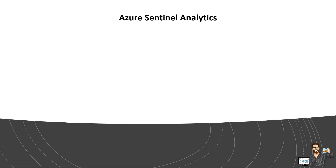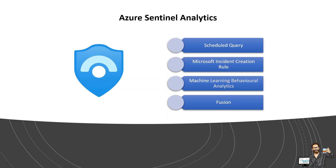So Azure Sentinel analytics — let's understand what analytic rules are available. We first have the scheduled query rule, then we have the Microsoft incident creation rule, then machine learning behavioral analytics, and fusion. Scheduled query rules run on a set schedule to detect suspicious events — every few minutes, every hour, every day, or any time period. The queries are built on KQL and these define what you are trying to detect. These rules will make up a large proportion of your analytics.